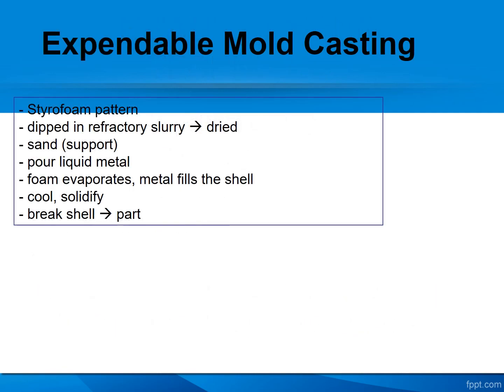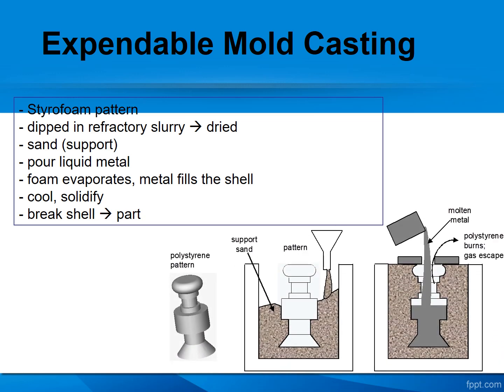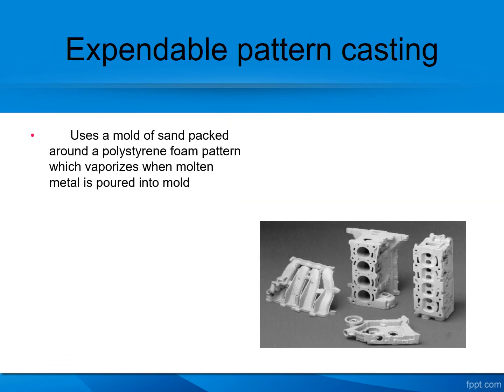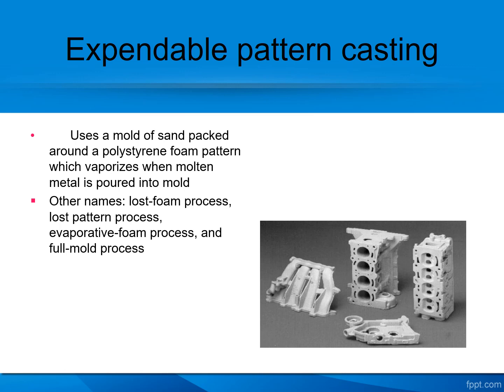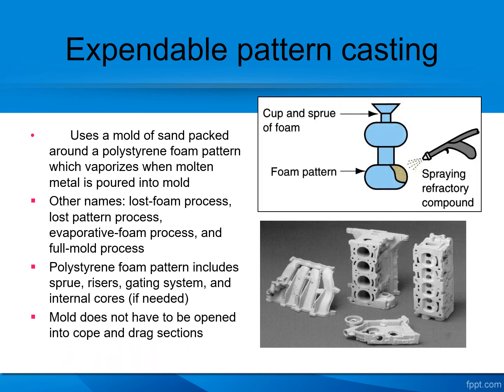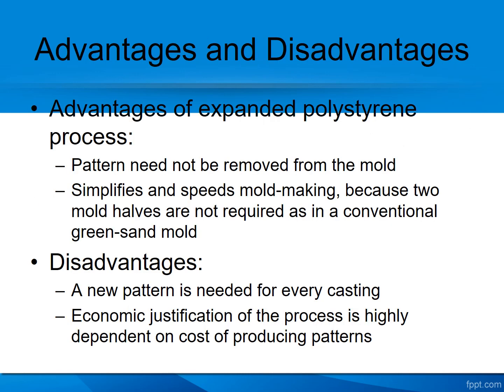First, expandable mold casting. The keyword for expandable mold casting is polystyrene foam. Similar to investment casting — also called the lost wax method — this is called the lost foam process. Polystyrene foam is used for making the pattern. Once the pattern is made, refractory material is sprayed around the foam and allowed to solidify. Then molten metal is poured and the foam melts out.